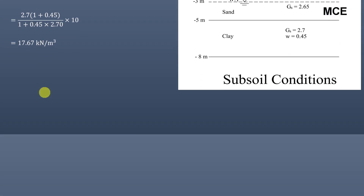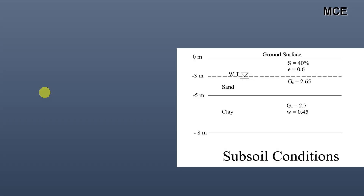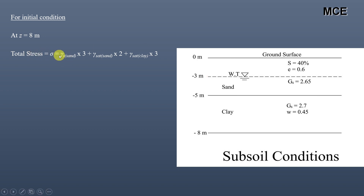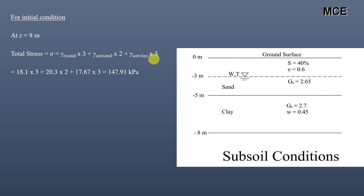After finding the unit weights, we calculate the effective stress at the bottom of the clay for the initial condition, when the water table is at 3 meters depth. At z = 8 m, total stress = γt(partially saturated sand) × 3 m + γsat(sand) × 2 m + γsat(clay) × 3 m. Substituting values gives a total stress of 147.91 kPa for the initial condition.